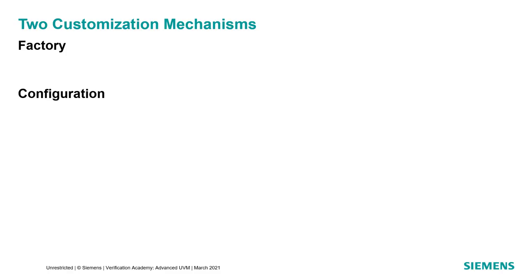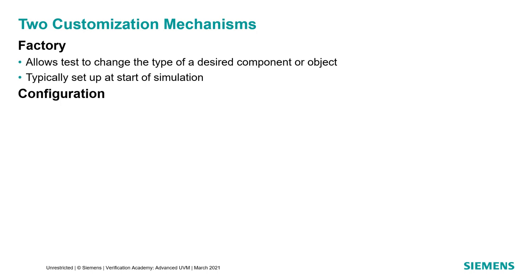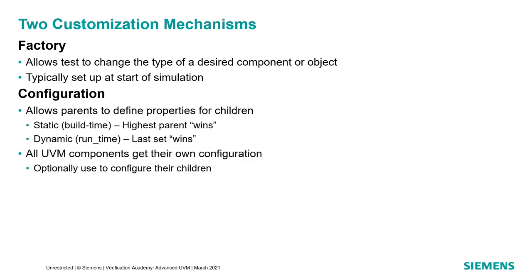In UVM, there are two basic customization mechanisms: the factory and the configuration database. The factory allows a test to change the type of a desired component or object, and it's set up at the start of simulation. Configuration, on the other hand, allows a parent to define properties for its children, either at build time or at runtime. Every component is responsible for getting its own configuration information, and each UVM component can optionally use that information to configure its children.